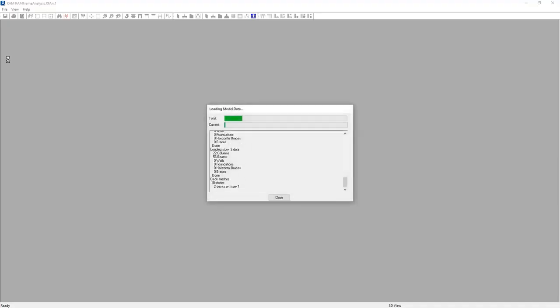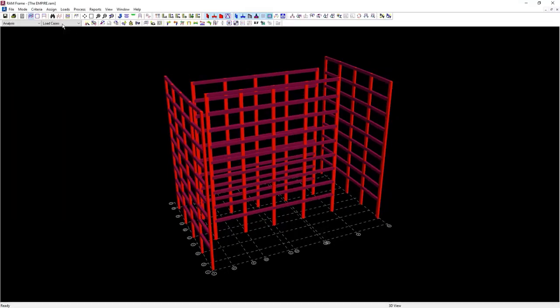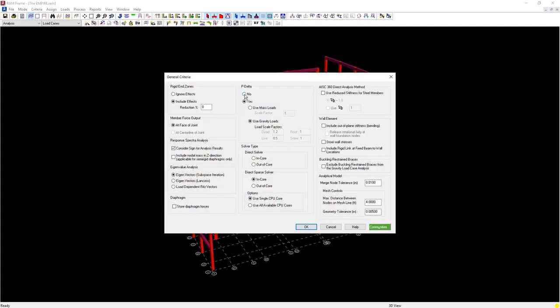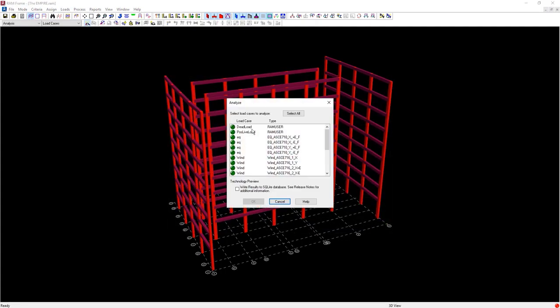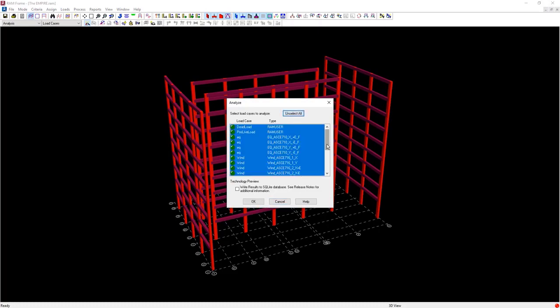The analysis of the structure is performed in RAM Frame. Initially, deselect the option to perform a large P-delta analysis. Perform the analysis of the structure for each of the load cases.